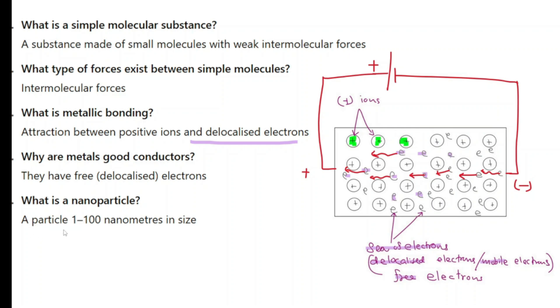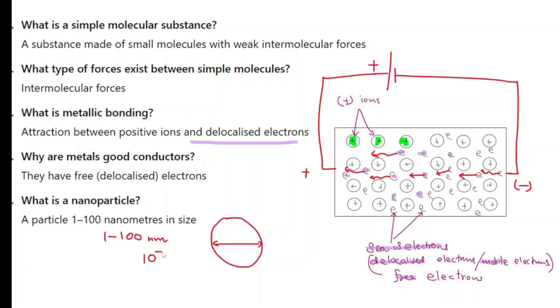Question 30: what is a nanoparticle? These are extremely small particles. By definition, a particle that is 1 to 100 nanometres in size is a nanoparticle — if the diameter of a particle is in the range of 1 to 100 nanometres, where nano is 10 to the power of negative 9 metres.